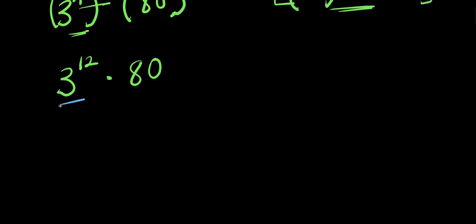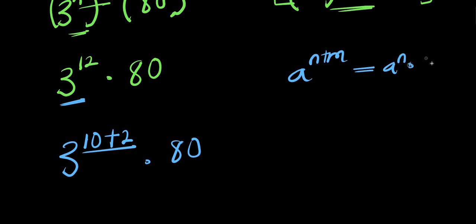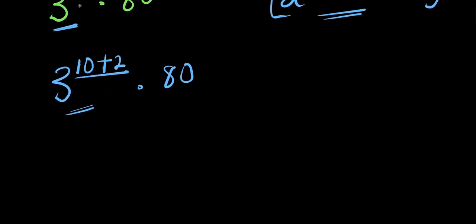We need to find the value of 3 to the power 12. We can express 12 as 10 plus 2, then applying the identity a to the power n plus m equals a to the power n times a to the power m, we get 3 to the power 10 times 3 to the power 2, times 80.